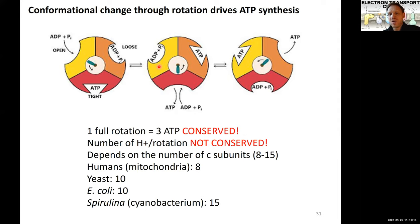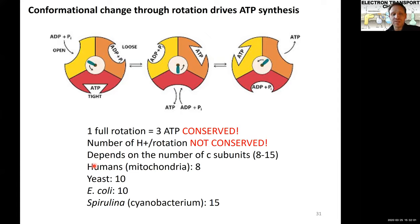What is curious is that the number of protons required per rotation is not conserved. The rotor of the F0 subunit has different numbers of c-subunits across organisms — known ATP synthases have 8 to 15 c-subunits. This matters because a larger wheel requires more protons to drive one rotation, which impacts how much ATP you can make. In humans, this is conserved at 8 c-subunits. Yeast and E. coli have 10. The current record holder is spirulina, a cyanobacterium sometimes sold as a supplement, with 15 c-subunits. It's not yet entirely clear why this variation exists.